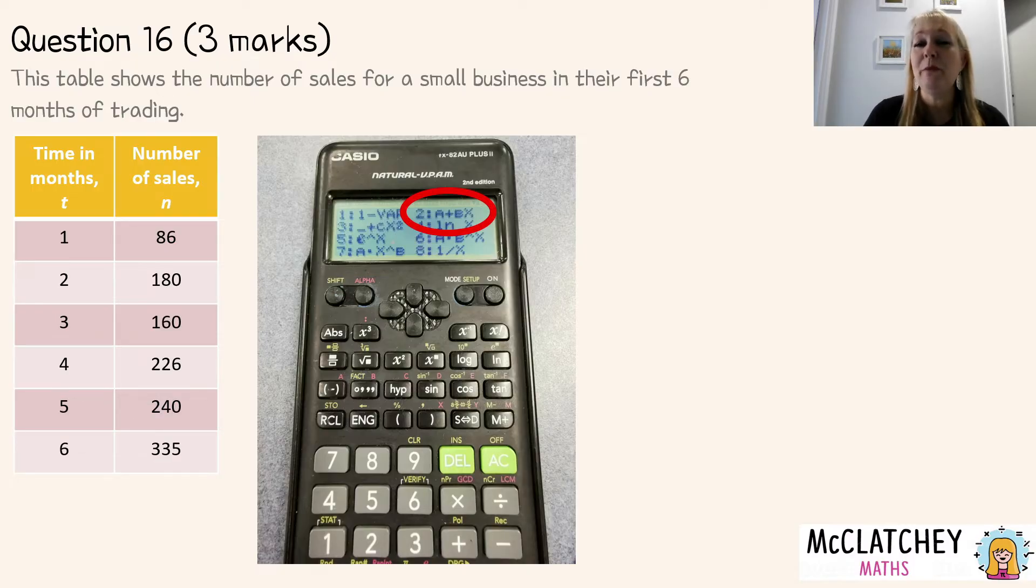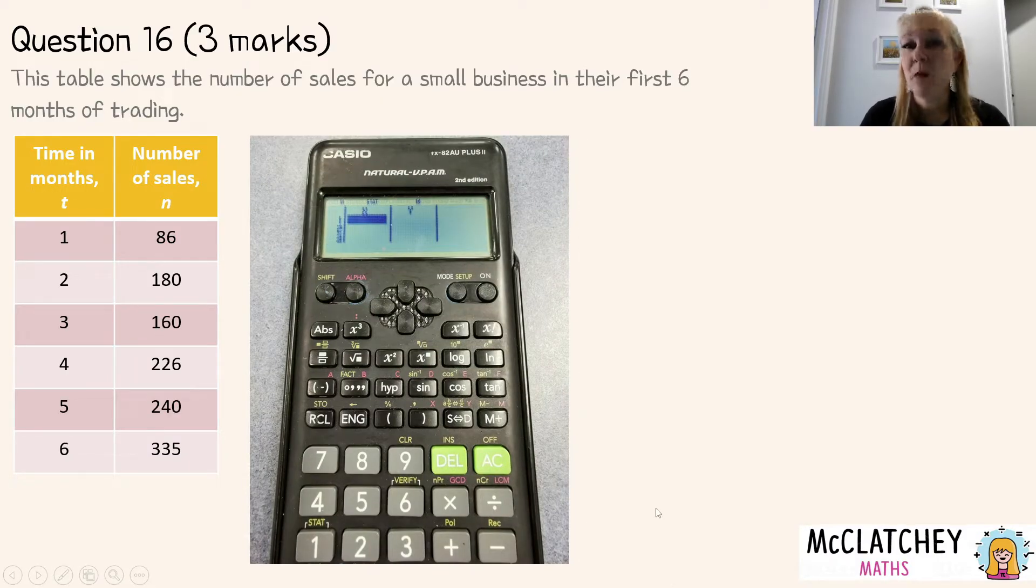If it doesn't come up straight away when you press that button try the shift button. Then we're going to get this menu here. Looks quite confusing and a lot of these buttons on here you'll never use. We're going to be using number two here which is our equation of a least squared regression line y equals a plus bx. So if we press the number two button on our calculator down in the keypad then what's going to come up is this menu with an xy table.